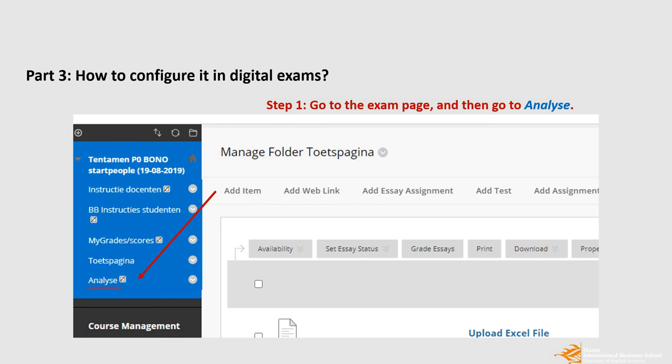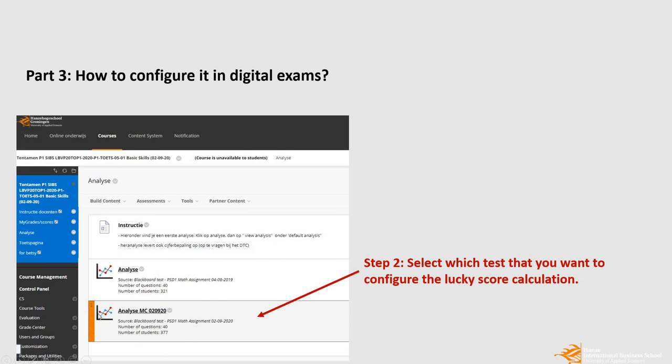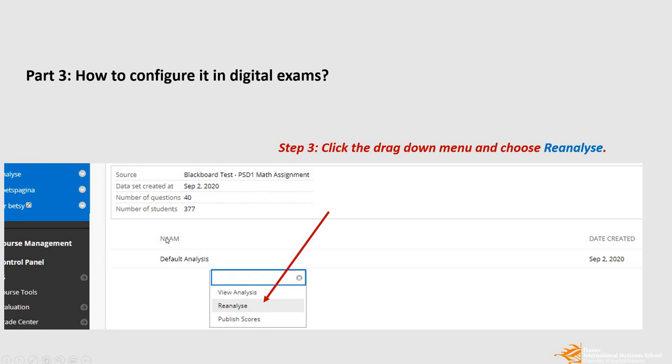For digital exams at Blackboard, how can we configure it? After students have taken the exams, in your exam web link, this web page, you can go to Analyze. This one is invisible for the students. And if you click Analyze, which is one of the options in the blue menu here, then you can see the options for you to analyze the exam that students have taken. Then you select which test you want to configure the lucky score calculation. And you can see, default analysis is already shown here.